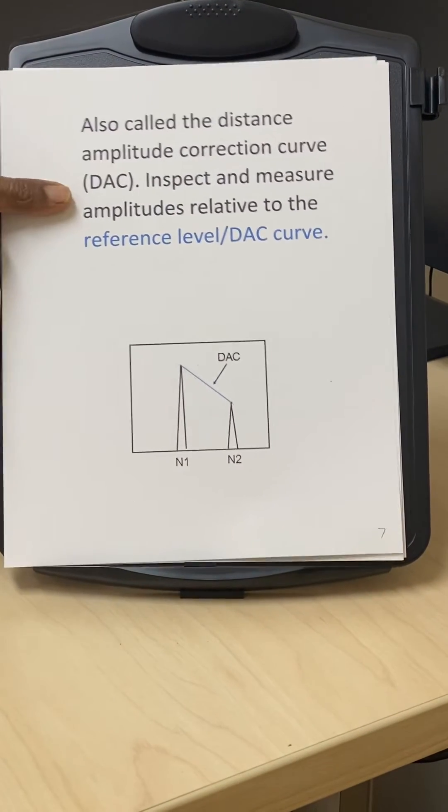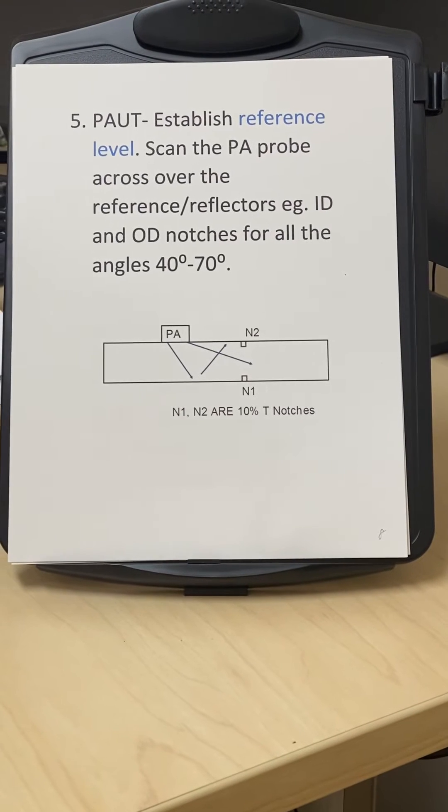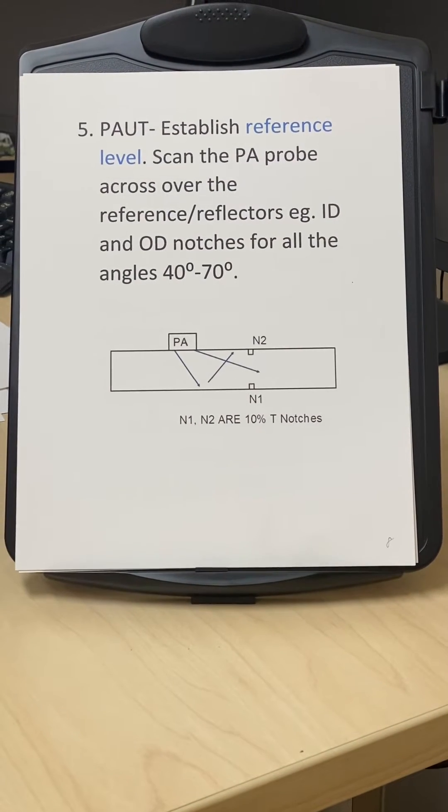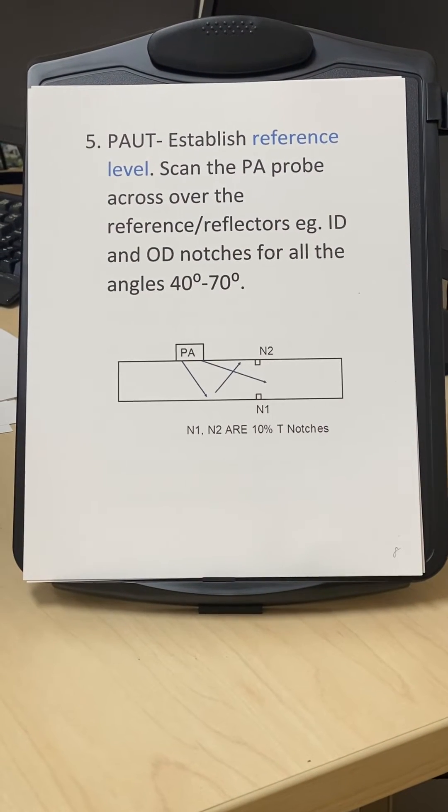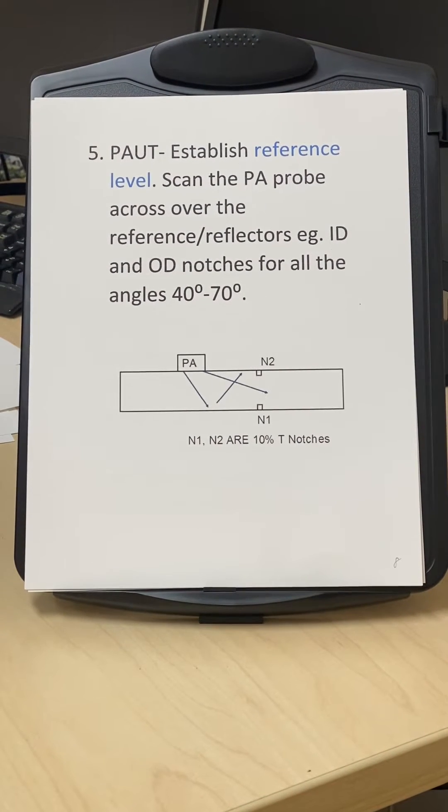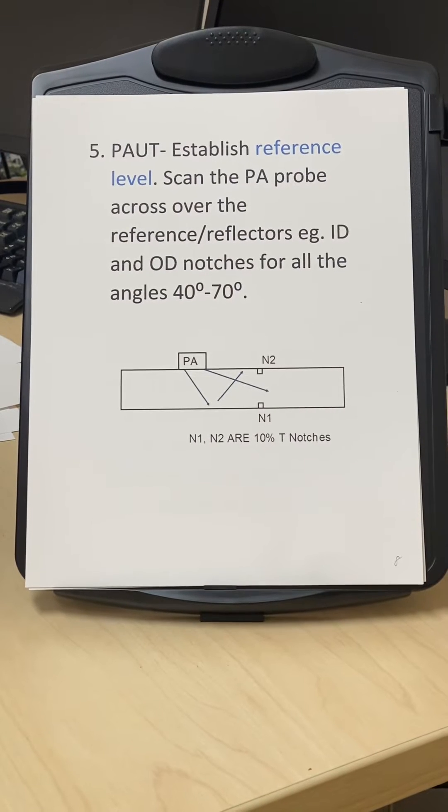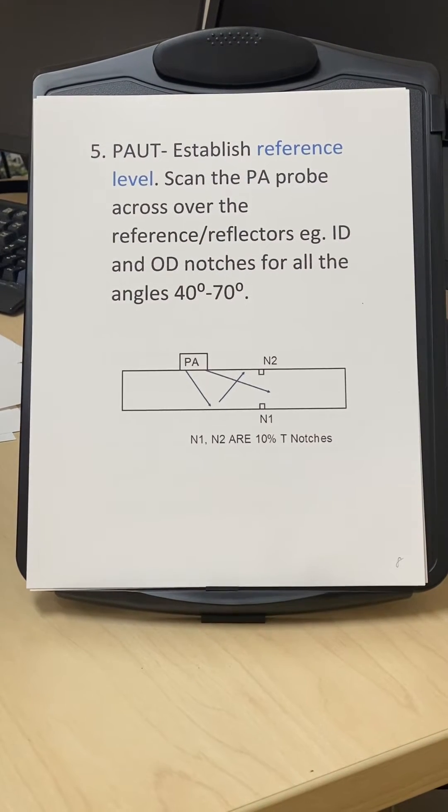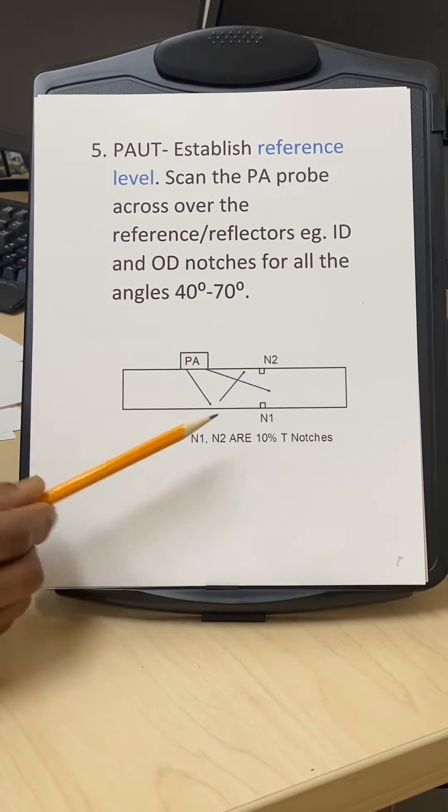Now for PAUT, we do a little bit different way because we cannot make a DAC curve on PAUT. So what we do is we make what's called TCG or time corrected gain.